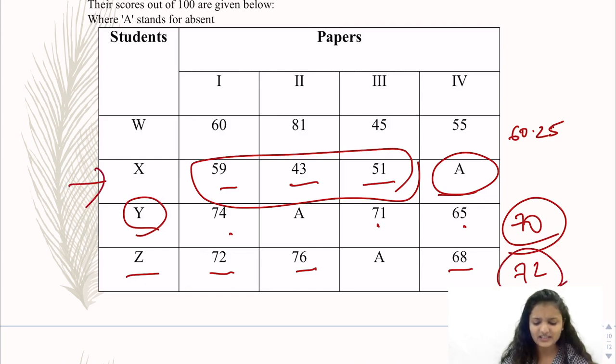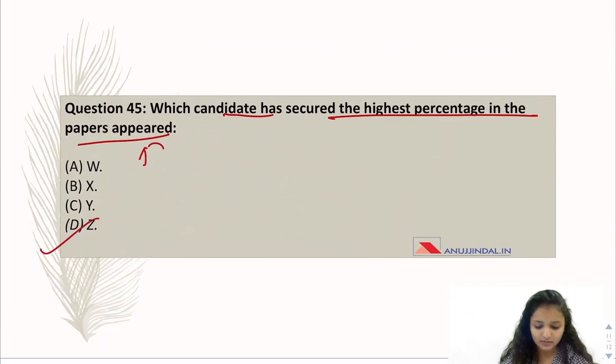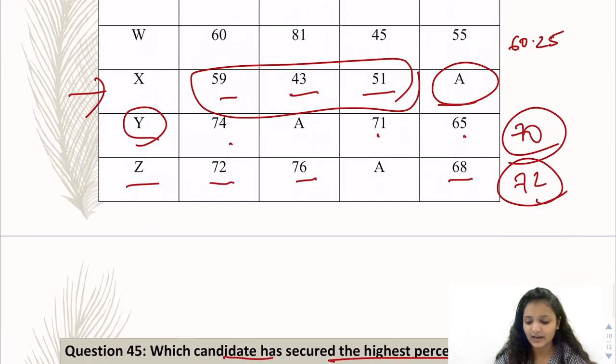You can leave X as well. Why do you increase the calculation in the paper? When you have limited time, you can see that X will not be the most aggregated in any way even if we calculate for the papers appeared. So the correct option here is option D which is Z with 72 percentage of marks.